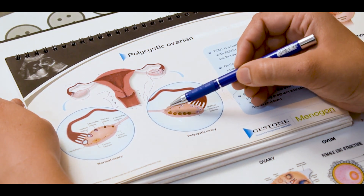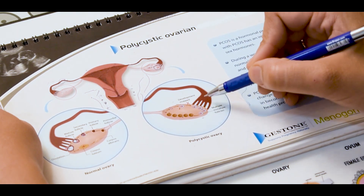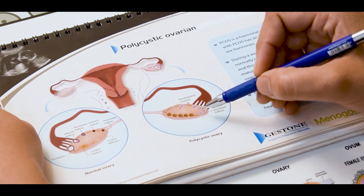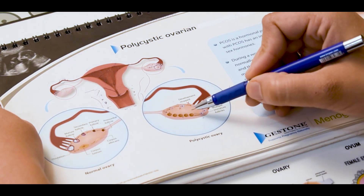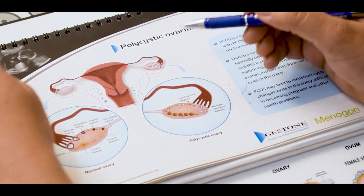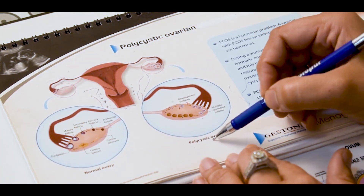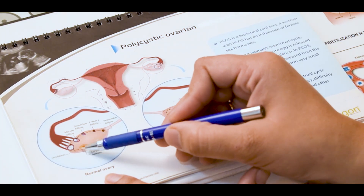What happens in polycystic ovaries is that an egg develops from the first day of menses, grows and grows, but it cannot reach its full size. It cannot rupture, so it does not release the egg. Instead it fills up and creates cysts.